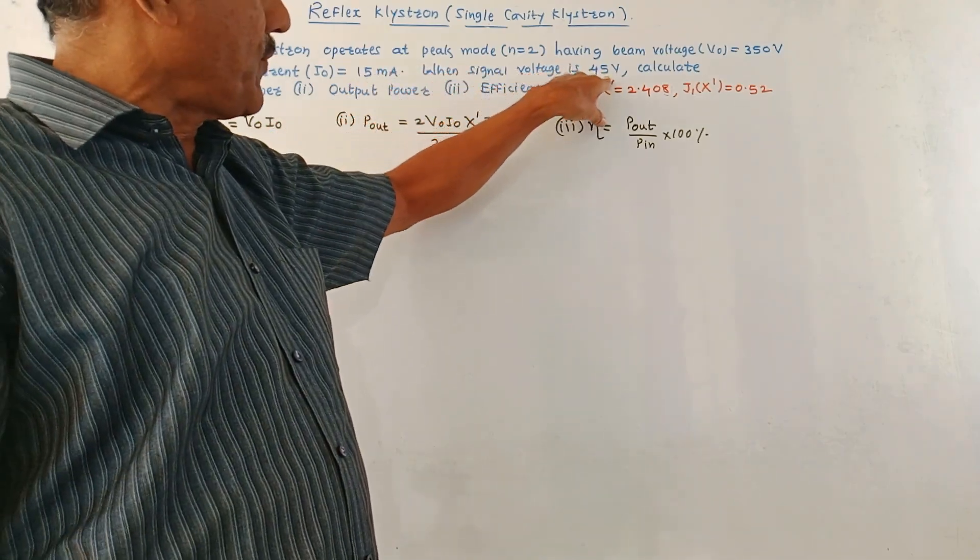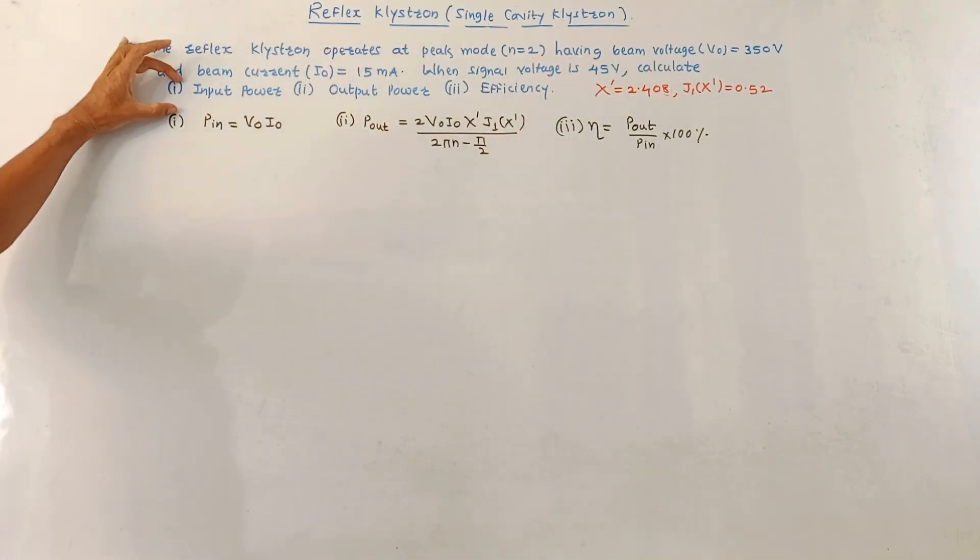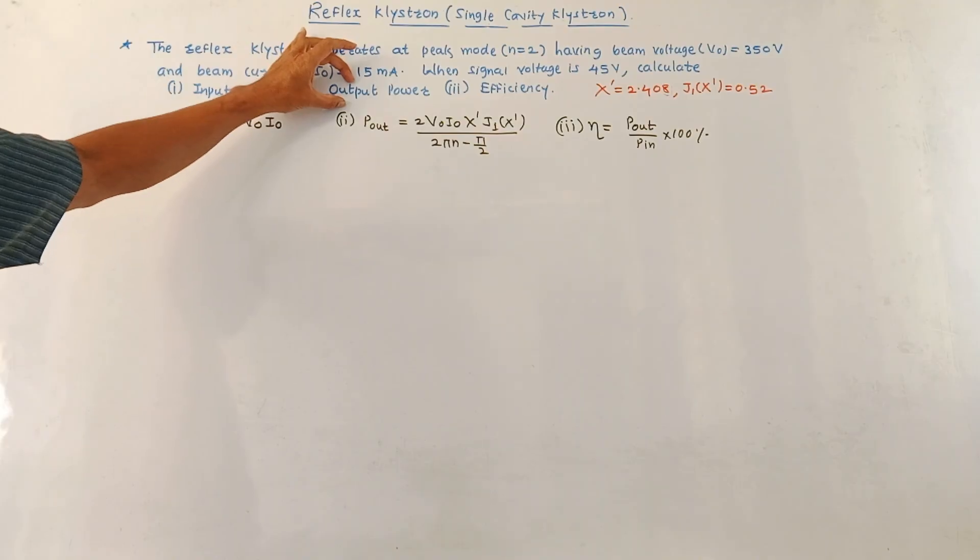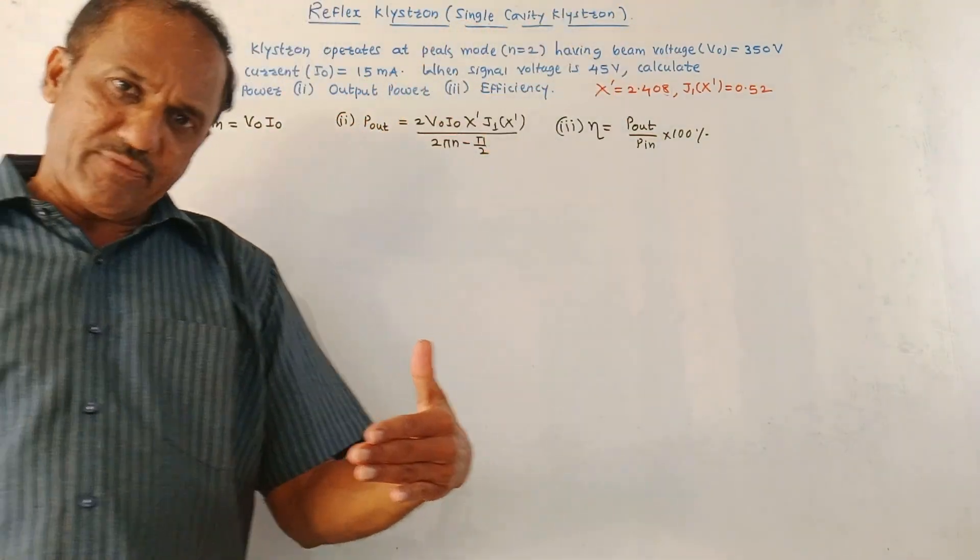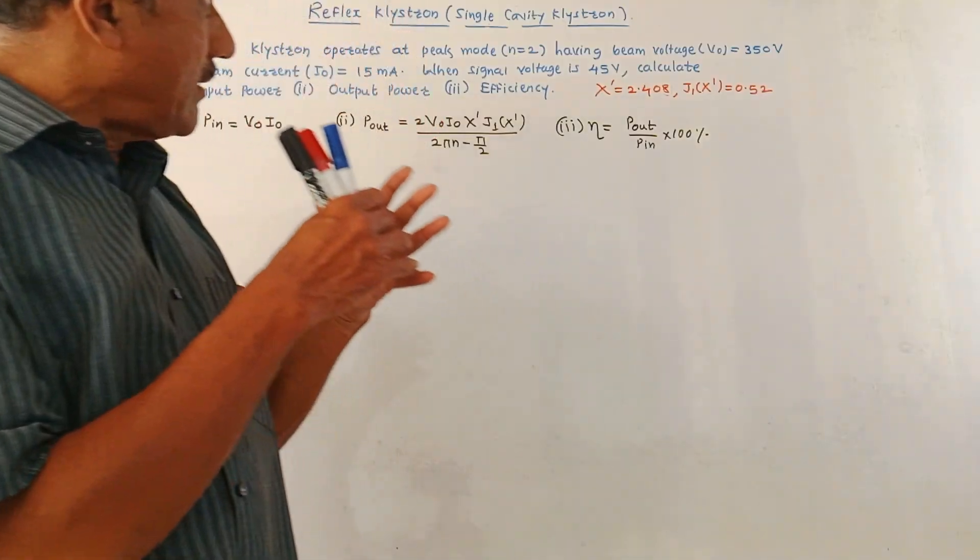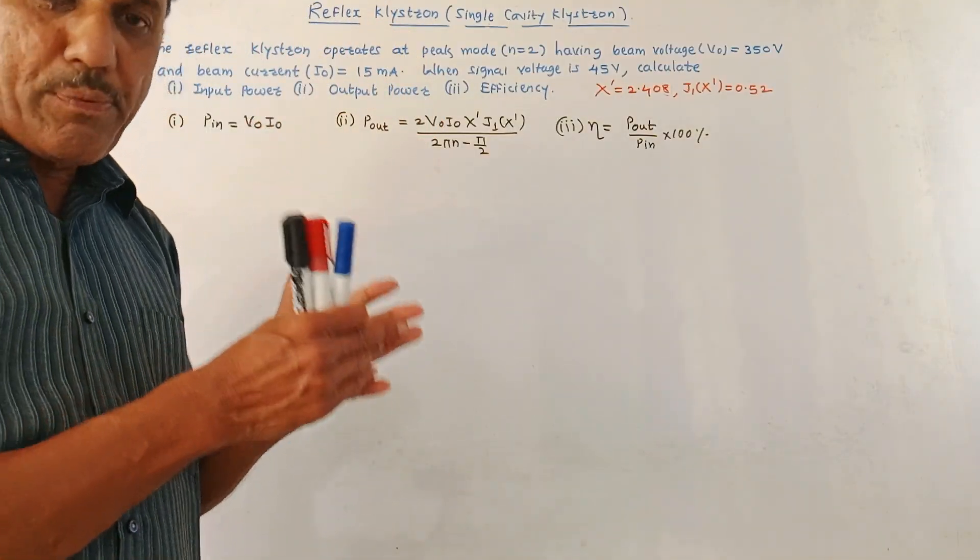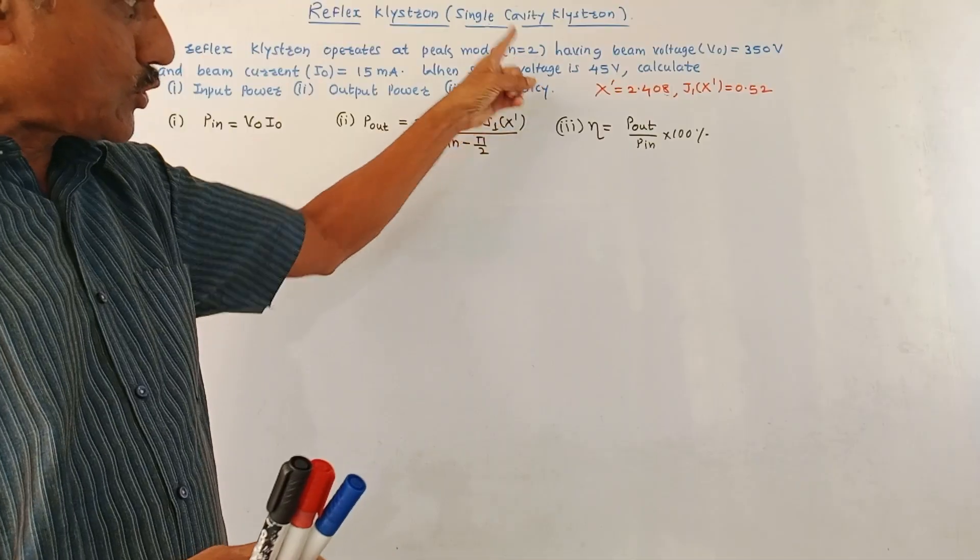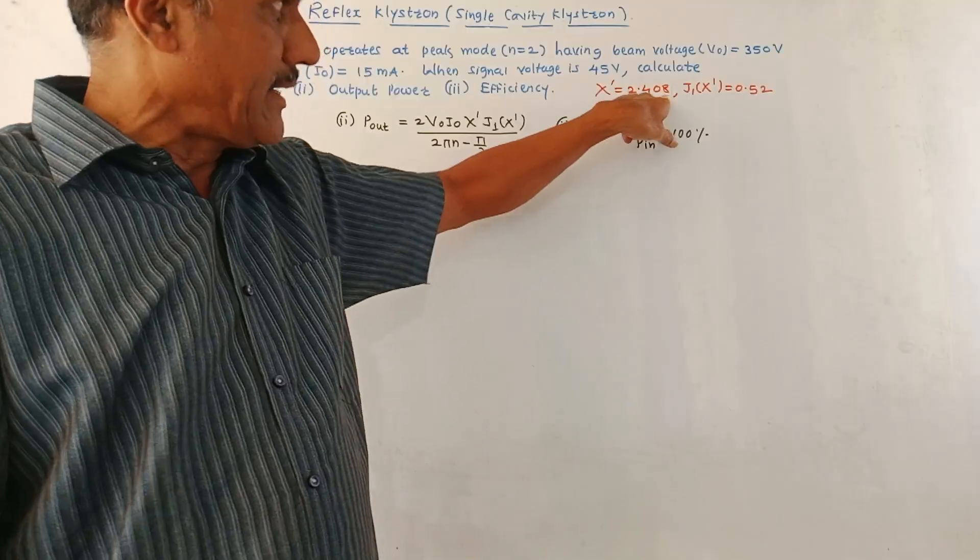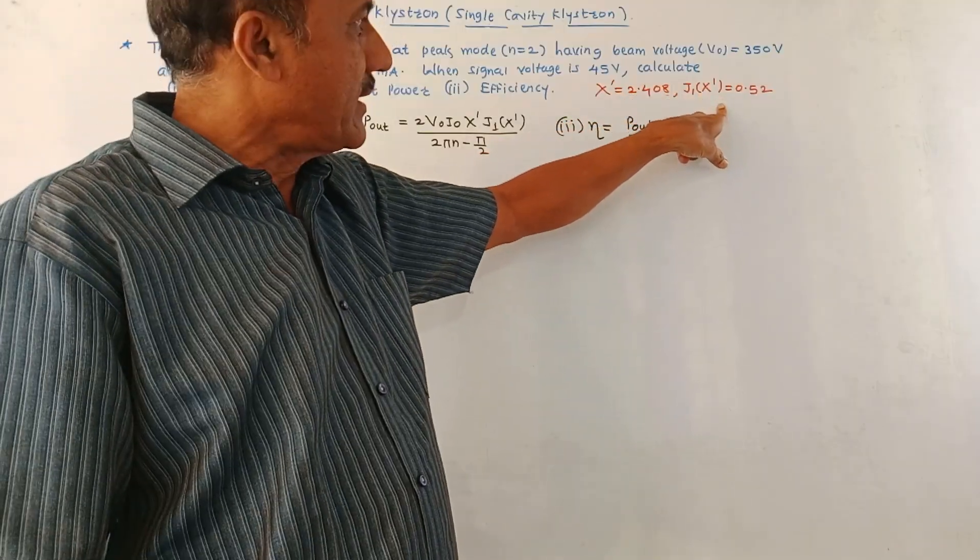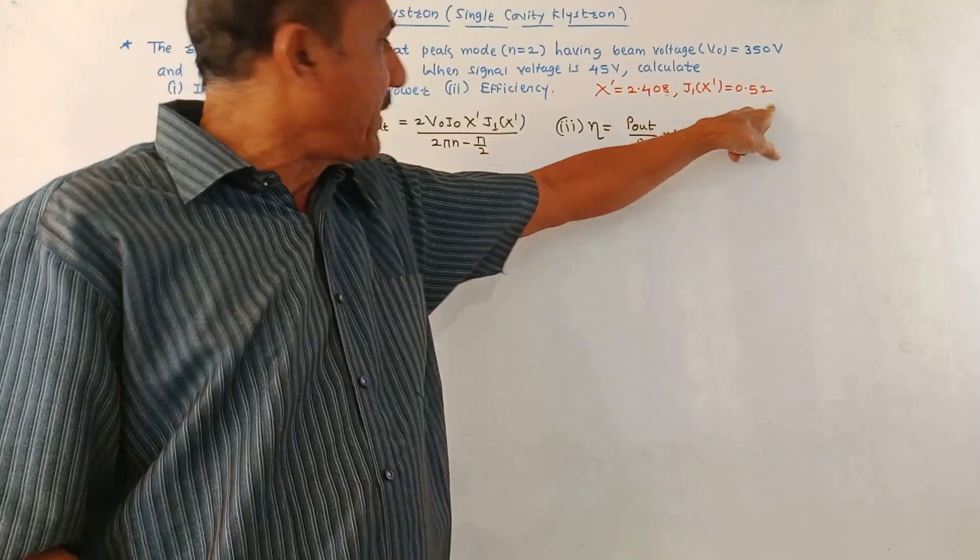When the signal voltage is 45 volt, calculate first part input power, second part output power, third part efficiency. Now, remember the basic values. When the reflex klystron is operating in the peak mode, that is n equals to 2 mode, then x dash, that is bunching parameter, is 2.408 and Bessel's function j1 of x dash is 0.52.